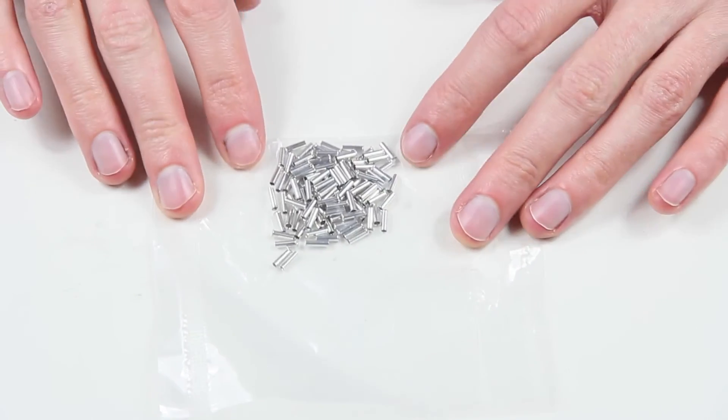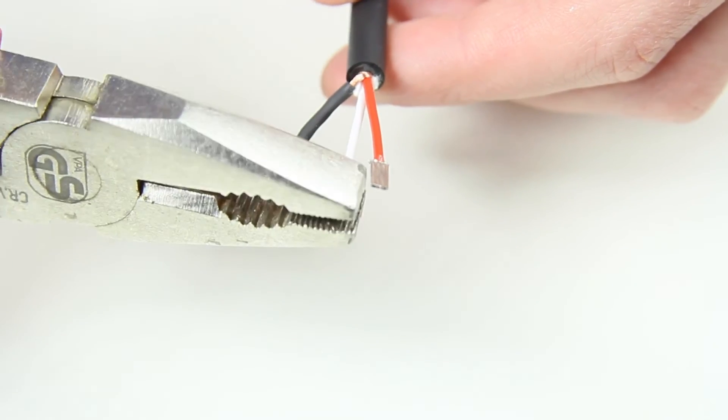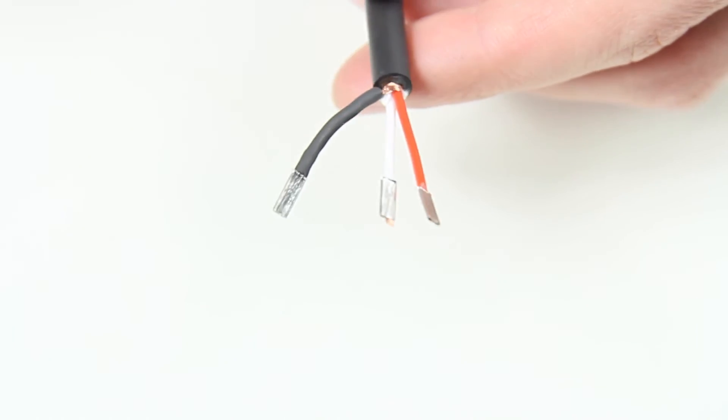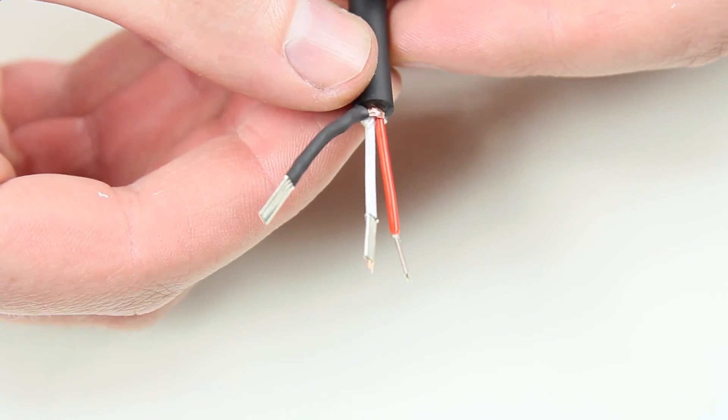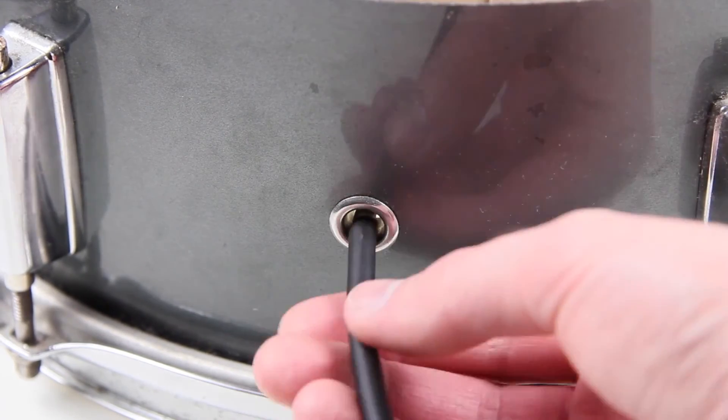Crimp sleeves will protect the cable ends. These cables can be screwed onto a terminal strip. This cable fits perfectly through any air hole.